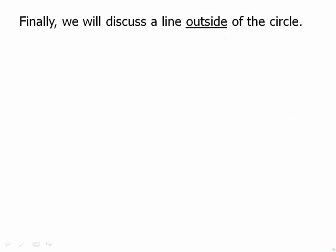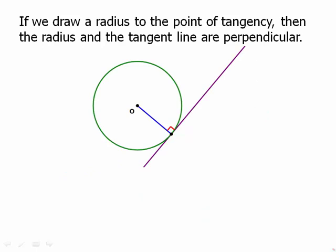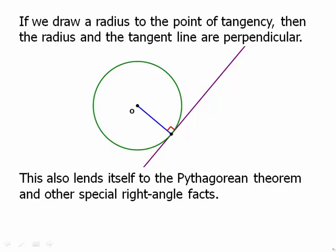As long as the angles are on the same side of the chord, the two inscribed angles have to be equal. Finally, we'll discuss a very special kind of line outside the circle. A tangent line is a line that passes by a circle and just touches it at only one point. The word tangent actually means to touch — we get the English word tangible from this same root. If we draw a radius to the point of tangency, then the radius and the tangent line are perpendicular, guaranteeing a right angle there.